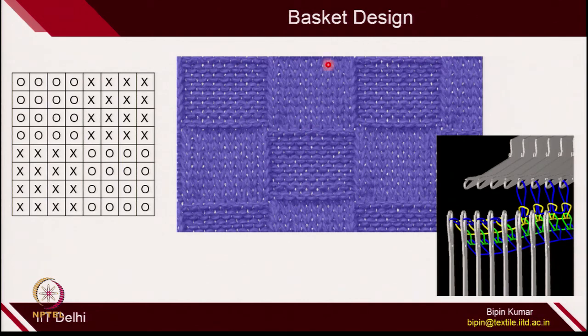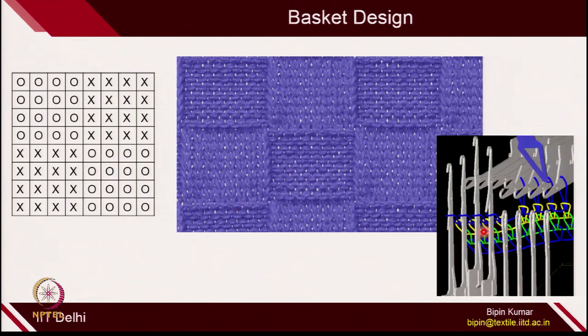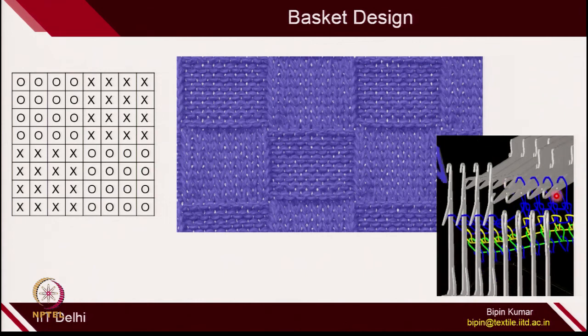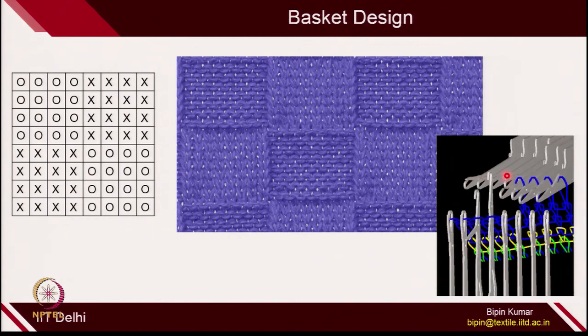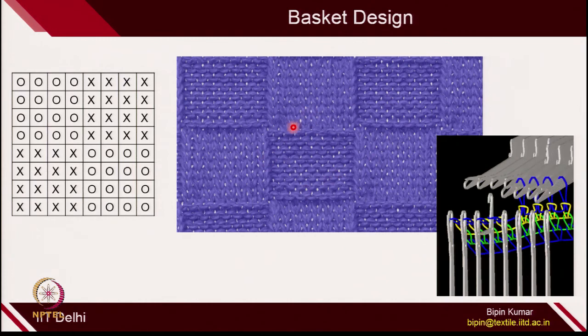Apart from rib and pearl design, there is a possibility of link design, where anywhere, anytime, you can create front and back loops. The most popular way is the basket design, where there is one segment of technical front loops and another segment of technical back loops, then front loops and back loops again. Using box notation you can see technical front loops and technical back loops arranged in blocks. Any needles can be selected at any position. Here you can see 5 needles on the front bed making front loops and 5 needles on the back bed making back loops, with the rest resting — this is how basket design is created.